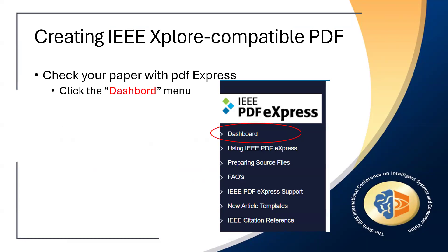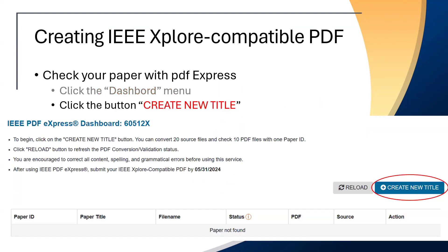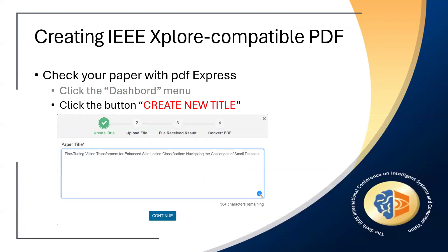Now we will proceed to check the paper. Click the dashboard menu. In the main page, click the button create new title. It is very important to note that you can convert 20 source files and check 10 PDF files with one paper ID. Fill in the paper title and click continue.